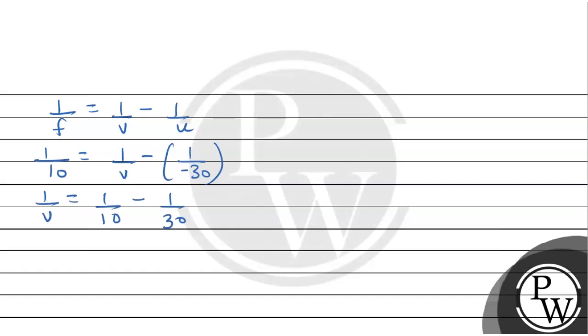plus 1 by 30. This becomes 3 minus 1 over 30, which is 2 by 30, which is nothing but 1 by 15. The image distance is coming out to be 15 cm.